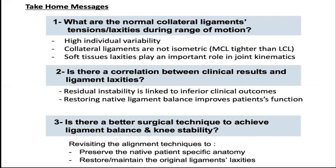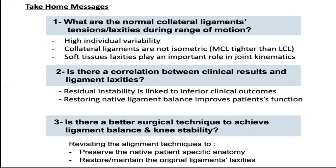Going back to our three questions, here are important points to remember. Regarding collateral ligament laxity: there is high individual variability, they are not isometric, the medial collateral ligament is tighter than the lateral collateral ligament, and soft tissue laxities play an important role in knee kinematics. Regarding clinical results: residual instability is linked to inferior clinical outcomes, and restoring native ligament balance improves patient function. Regarding surgical technique: it is important to revisit our alignment technique to preserve the native patient-specific anatomy and to restore original ligament laxities.